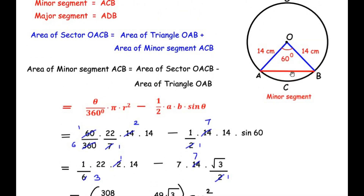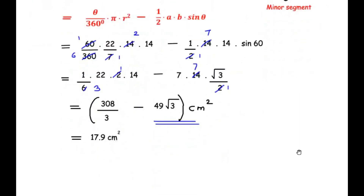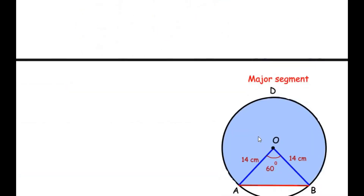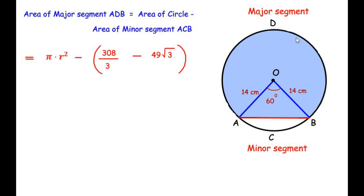Now let us find the area of the major segment. Redrawing the figure, the highlighted region represents the major segment. To find its area, we subtract the area of the minor segment from the area of the entire circle. So: area of major segment ADB = area of the circle − area of minor segment ACB. The area of a circle is πr², and the area of minor segment ACB is 308/3 − 49√3.